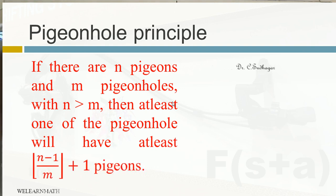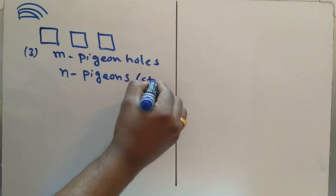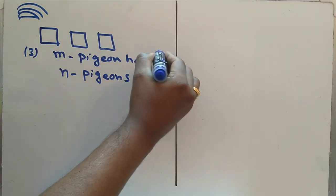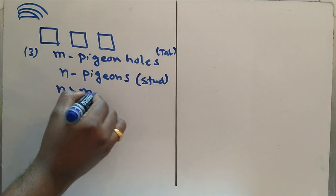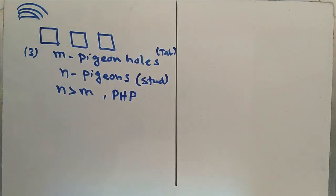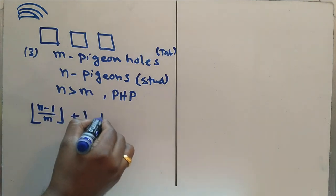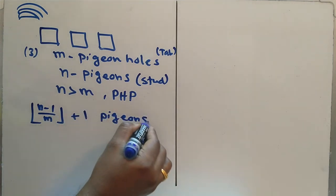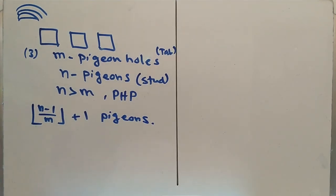He can again come to the same table. So pigeons are like students and holes are like tables. If the n is greater than m, then the pigeon hole principle applies. In brief we will write PHP. The PHP will apply. What the PHP says is at least one of the table will have ⌊(n-1)/m⌋ + 1 pigeons.